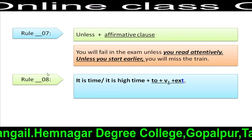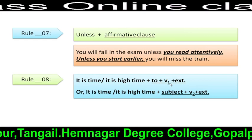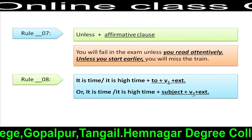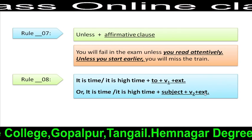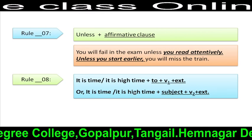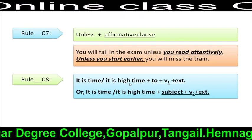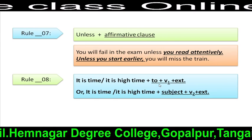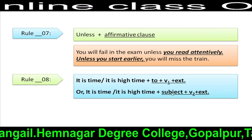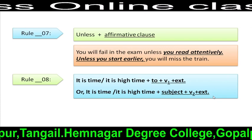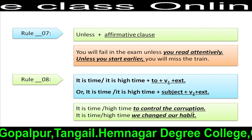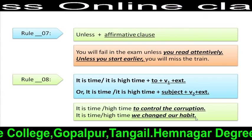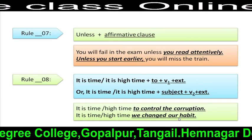Rule 8: It is time / It is high time + to + V1 + extension. Or another structure: It is time / It is high time + subject + V2 + extension. If we don't find any subject, we can use only the 'to + infinitive' phrase. But if there is a subject, then we have to use V2 (simple past) + extension. For example: 'It is high time you studied hard.' Here, subject + V2 + extension is used.